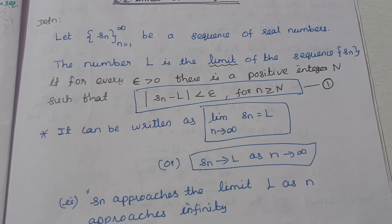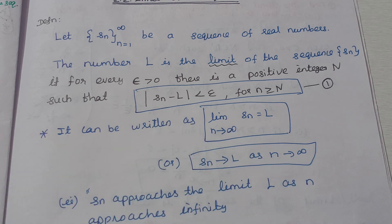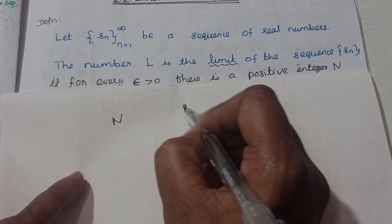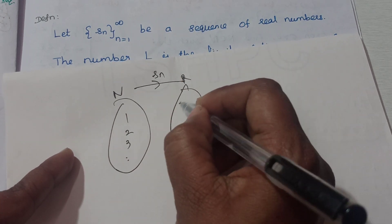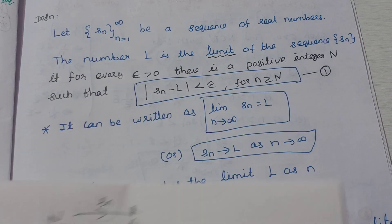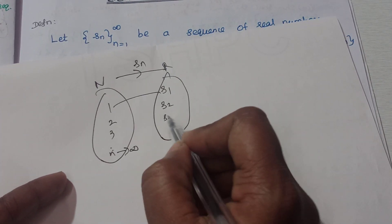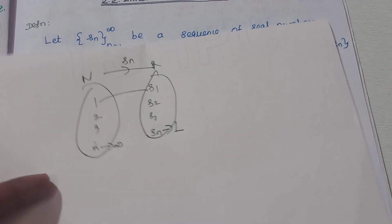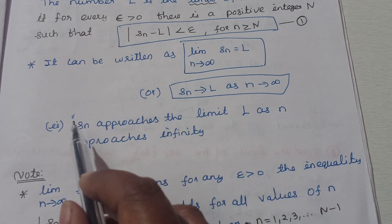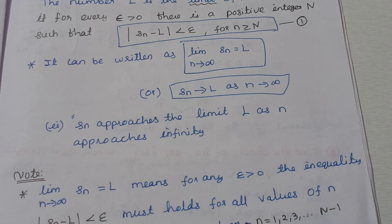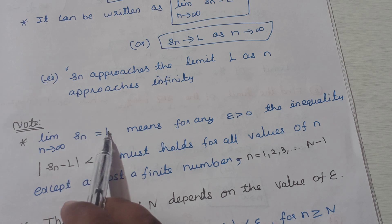So the sequence s_n has a limit. It is written symbolically as: limit as n tends to infinity of s_n equals l. The sequence is a function from the natural numbers to the real numbers — s1, s2, s3 and so on. As N approaches infinity, the nth term of the sequence approaches the limit l. In other words, s_n approaches the limit l as n approaches infinity.